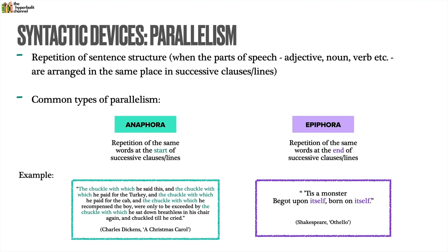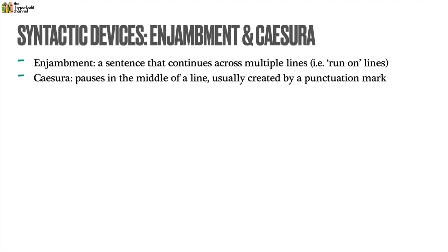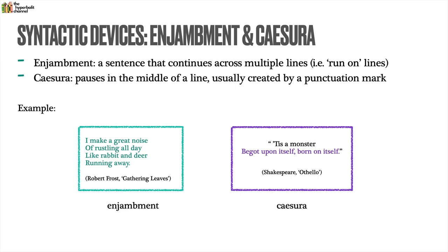Next up, enjambment and caesura — opposite devices. Enjambment is a sentence that continues across multiple lines, which we usually call run-on lines. Caesura is the pause in the middle of a line, usually created by some sort of punctuation mark. Illustrating enjambment with our Robert Frost example: 'I make a great noise of rustling all day like rabbit and deer running away' — the entire stanza is just one sentence spanning four lines, so the sentence spills across multiple lines. For caesura, going back to the Othello example: 'begot upon itself, born on itself' — the middle pause created by the comma is an example of caesura.